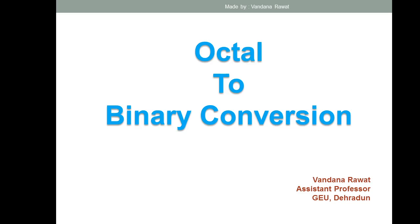Good morning everyone. Before the midterm exam I told you about different number system conversions. There were four types: binary, octal, decimal, and hexadecimal number systems. I covered different conversions in the previous video lectures. The remaining part I haven't covered yet is the octal number system — how to convert octal to binary, octal to decimal, and octal to hexadecimal. In today's session, this part will be covered.